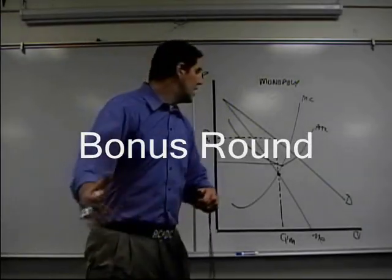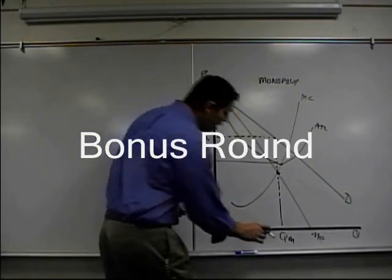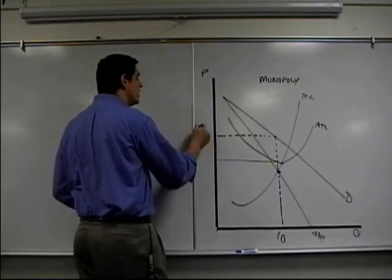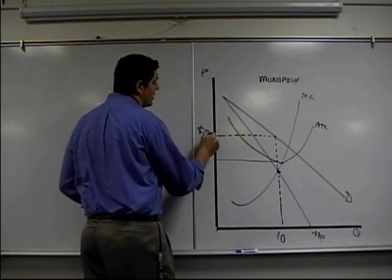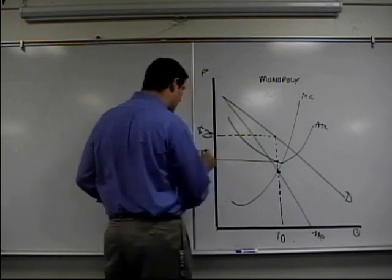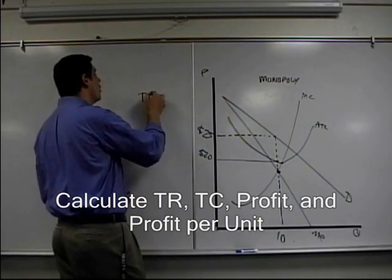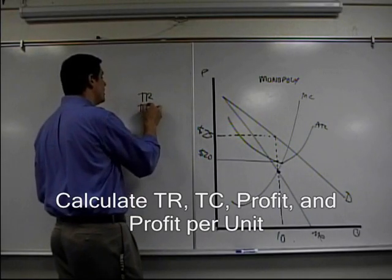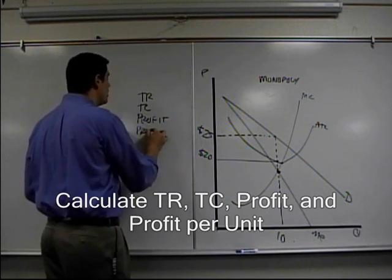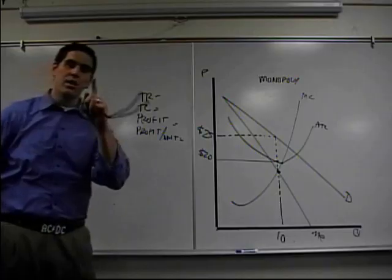Time for a bonus round. I can't give you a graph without making you calculate a few things. Let's change this quantity to 10, this price to 25, and this ATC — which is right down here — to 20. What I want you to do is give me the total revenue, the total cost, the profit, and the profit per unit. Once you can give me that, then you get this concept. Ready? And go.